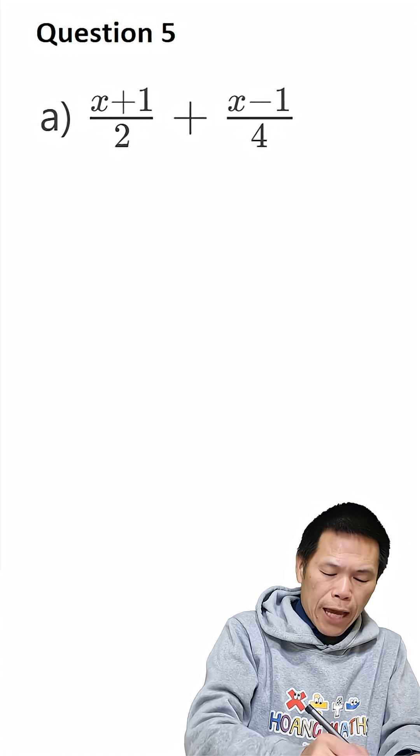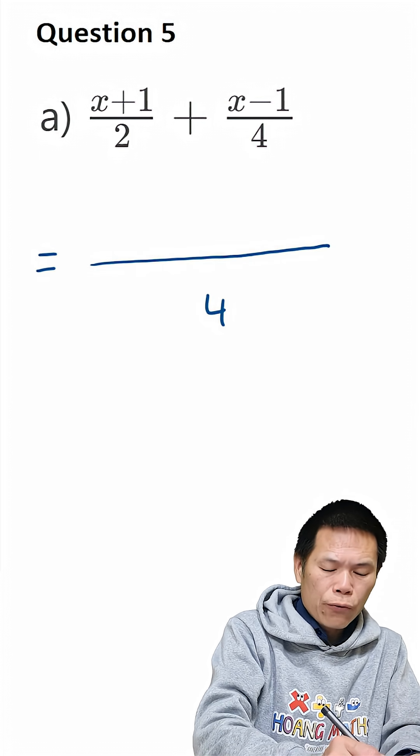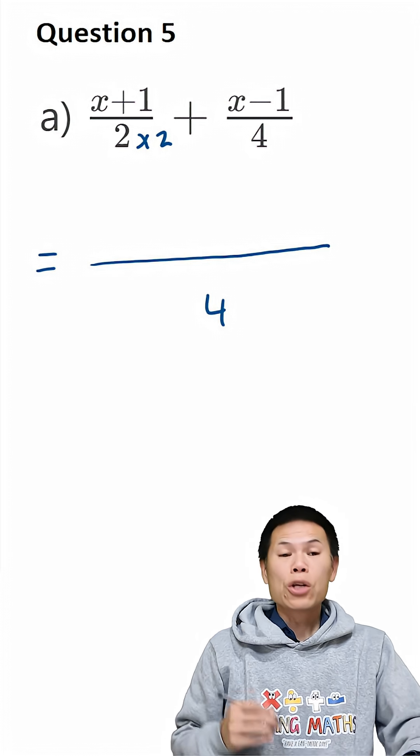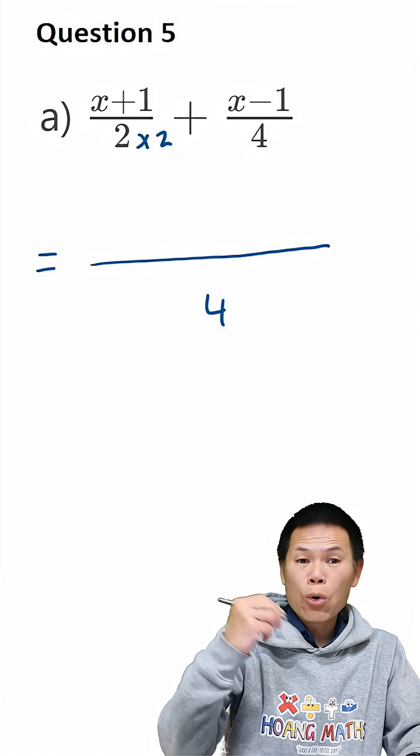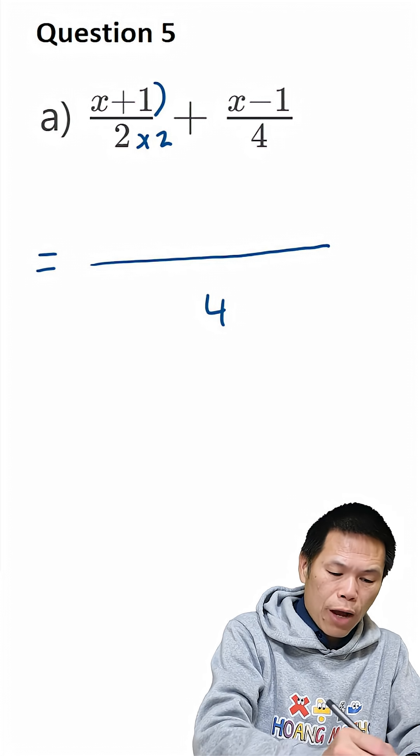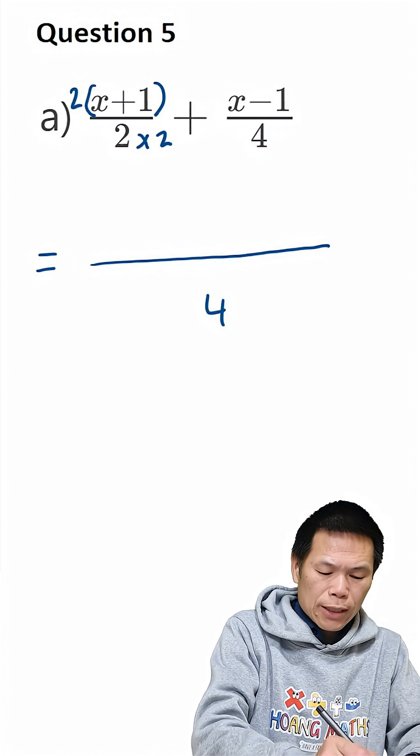So this means that, let me write in one fraction, so this would be 4. So from 2 to 4, I times 2. So therefore, the top must times by 2. So because the whole lot times 2, so I put the bracket, I put 2 in front. Keep that in mind. So let me just write this out.